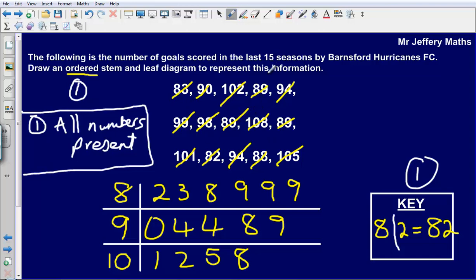So what I like to do is to just count up at the end. We are told here that we have got information for 15 seasons. So let us just check our stem and leaf diagram to check that we have got 15 numbers in there. So if we just check this, we have got 1, 2, 3, 4, 5, 6, 7, 8, 9, 10, 11, 12, 13, 14, 15.